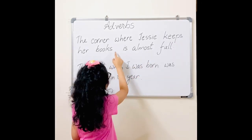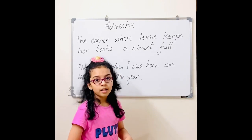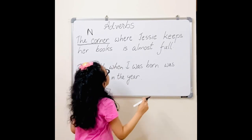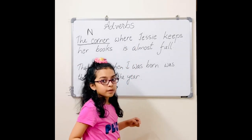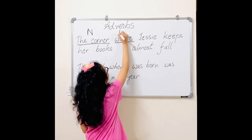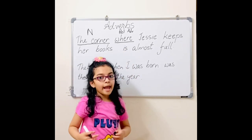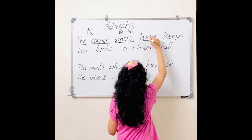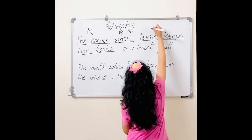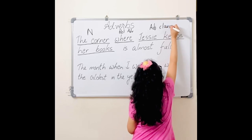The corner where Jessie keeps her books is almost full. Where does she keep her books? She keeps them in the corner, which is the noun. Where starts the adjective clause, which is Jessie keeps her books. So where is the relative adverb, and the adjective clause is Jessie keeps her books.